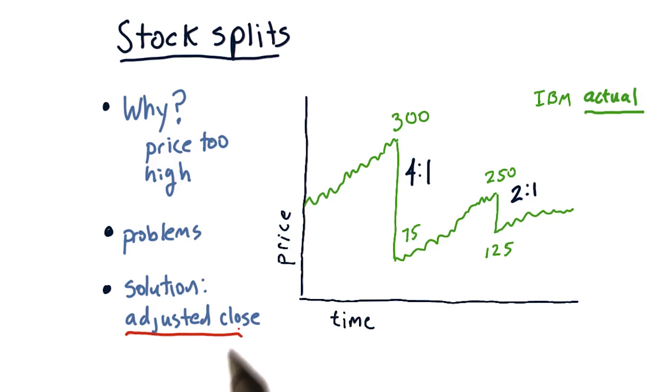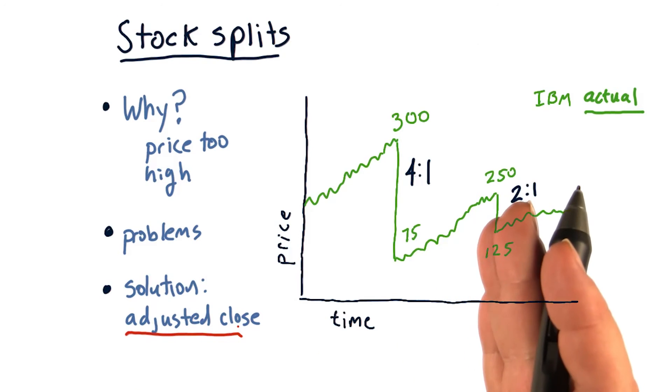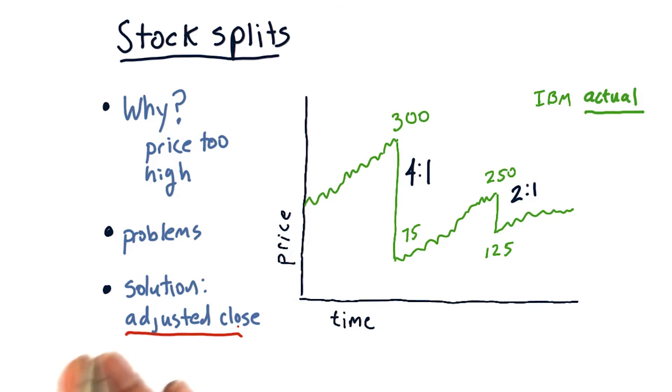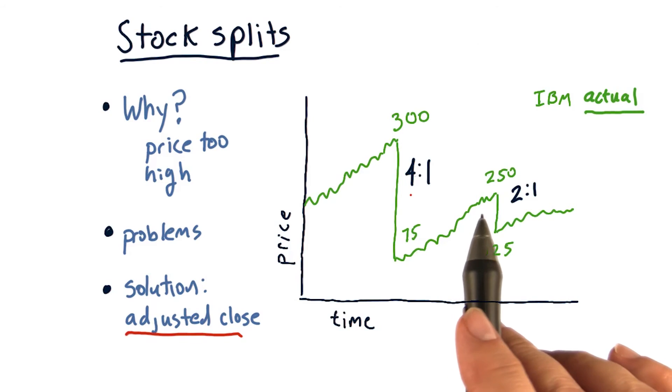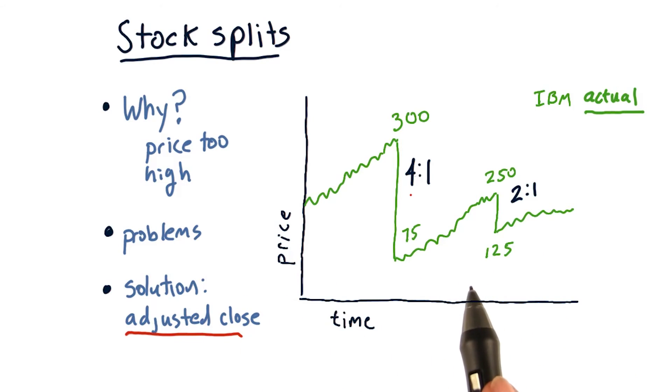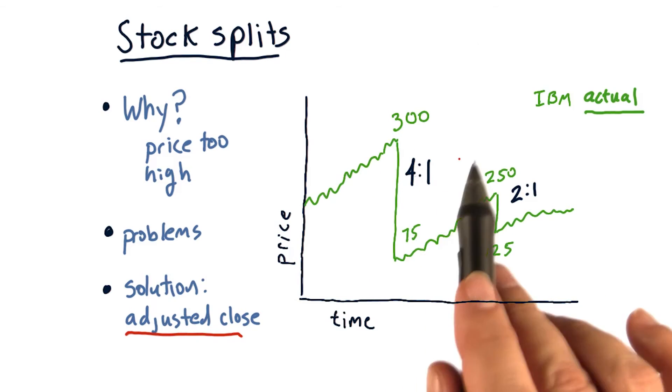So someone came up with a great solution to this problem, namely adjusted close, or adjusted prices. And the idea is to create a timeline of prices that are adjusted to account for these changes, such that you can look back over adjusted close, simulate buying at a particular time, and seeing how the value increases over time accurately without having to account for these splits.